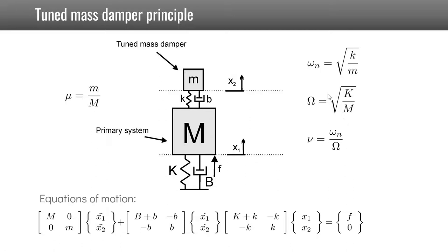The equations of motion are written below. We have the vector of unknowns, the displacement x1, x2 of the primary system and the secondary system, and the velocities and accelerations. We have here the mass matrix which contains the two masses, the damping matrix which contains the two dampers, and the stiffness matrix which contains the two stiffnesses. Here is the force acting on the first mass.